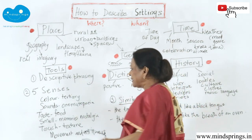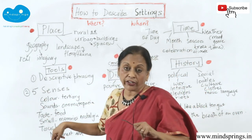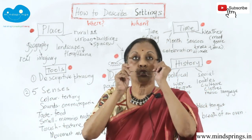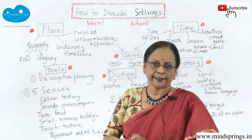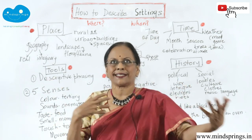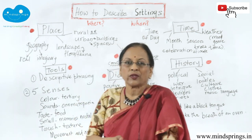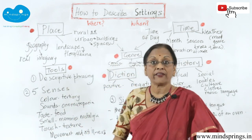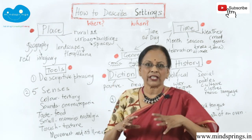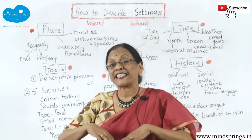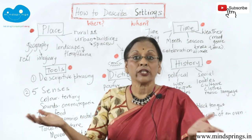Don't forget the senses. The tools you've got are descriptive phrasing and the five senses. Any place you are in, you understand it with your five senses. You have color — don't use 'it was black, brown, green, gray.' If you describe the sea as aquamarine or the sky as cerulean, you'll find there is a magical touch in your writing. Take tertiary colors. Then sounds — onomatopoeia — because you're always hearing things when you go to places.